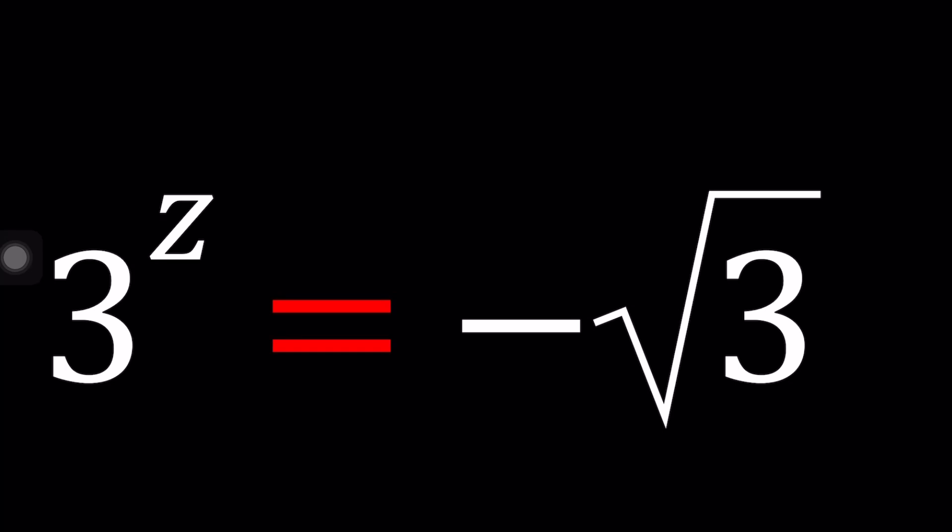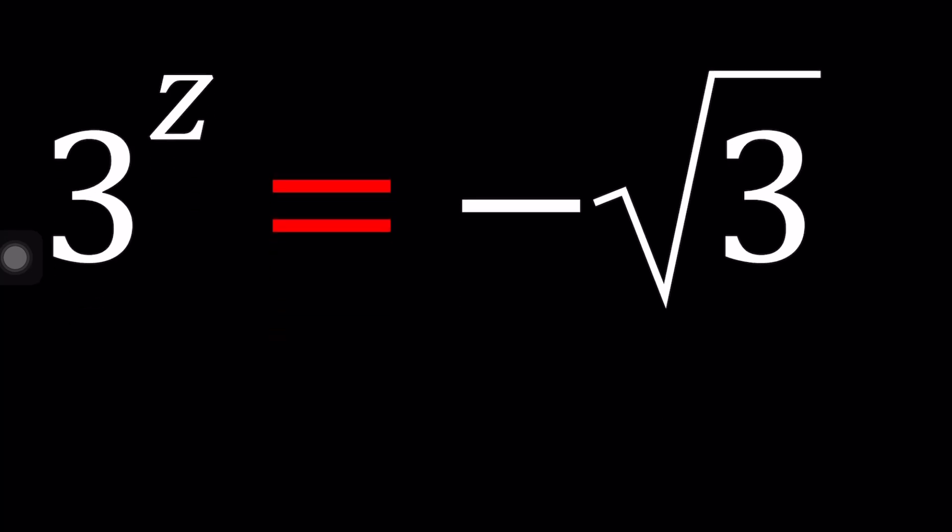So if we did not have the minus sign, everything would be better, right? If we had 3 to the z equals square root of 3, you would probably think about it as 3 to the power of 1 half, z equals 1 half, case closed. But that's not the case. We have a minus sign, and that's what makes this equation more interesting. It adds another level of complexity.